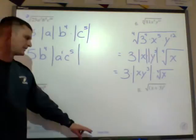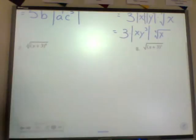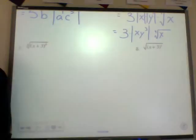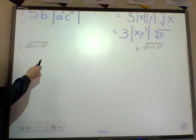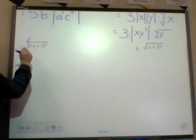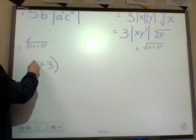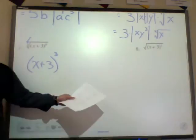Number seven: the cube root of the quantity x plus 3, to the ninth power. As soon as you see a cube root — an odd index — you're never going to need absolute value symbols. I have nine of those x plus threes inside, broken into groups of three. For every group of three I can pull one out, so I take out three of them. The answer is simply x plus 3, cubed.